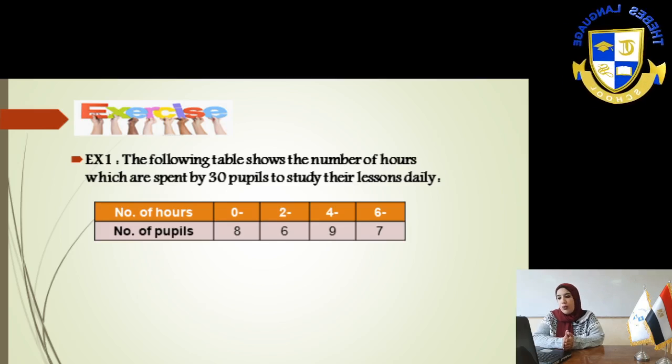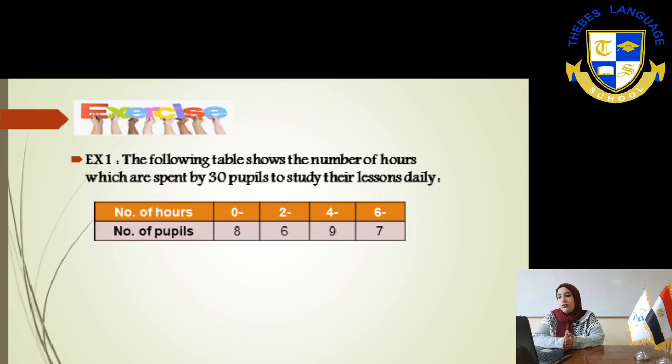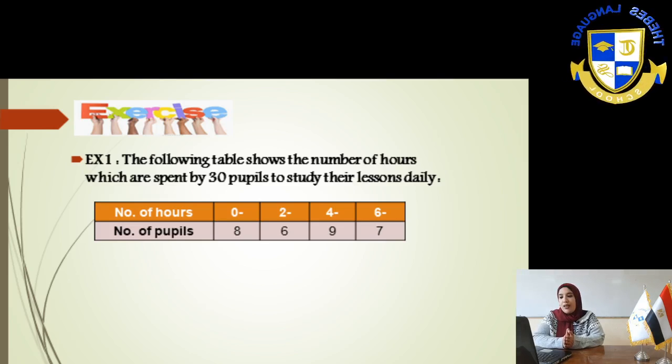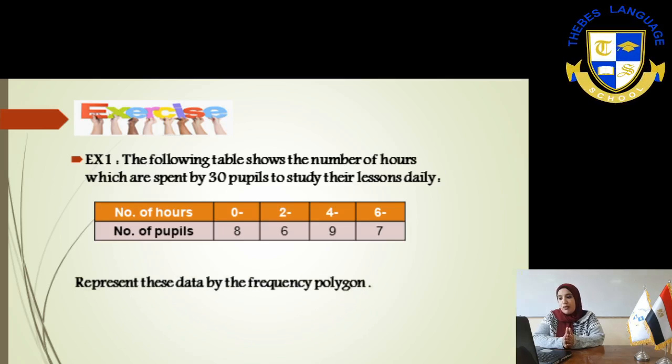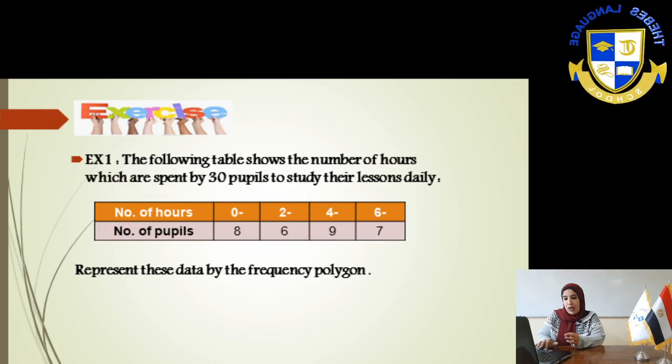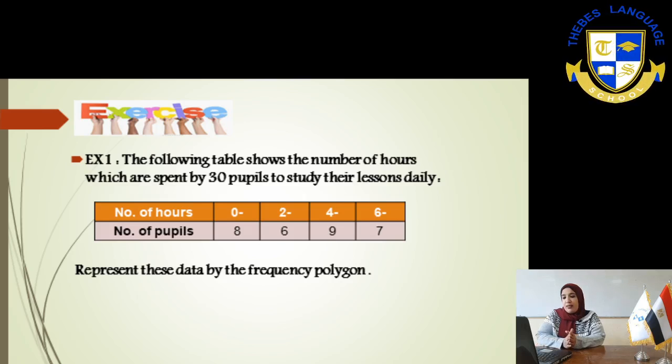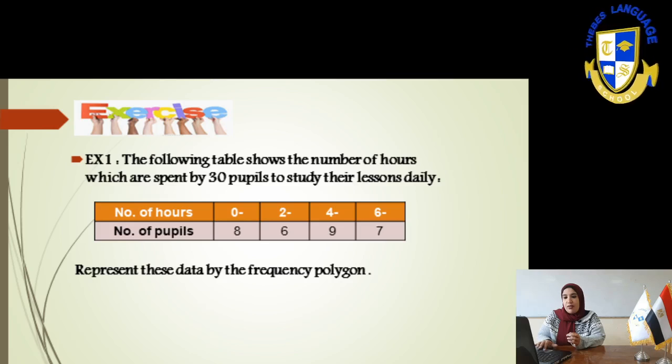From 0 to 2 will be 8 students, from 2 to 4, 6 students, from 4 to 6, 9 students, from 6 to 8 it will be 7 students. This type of method will be how can we do it by using sets. Represent this data using frequency polygon.